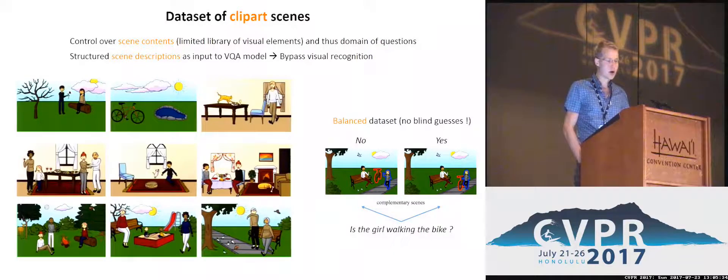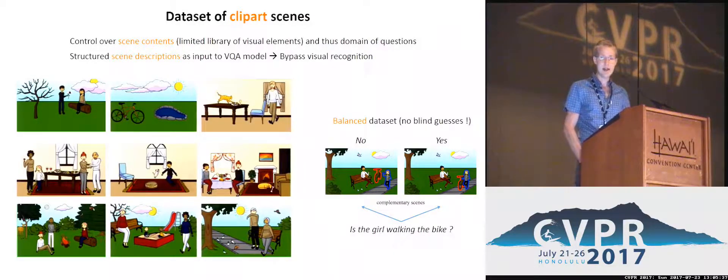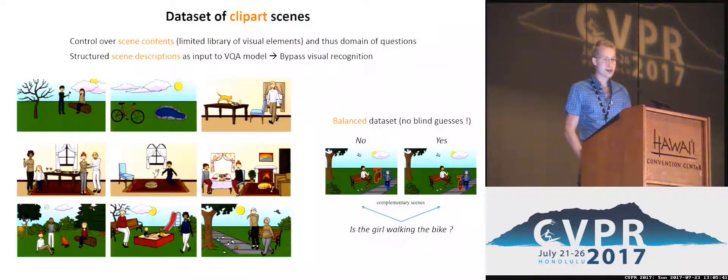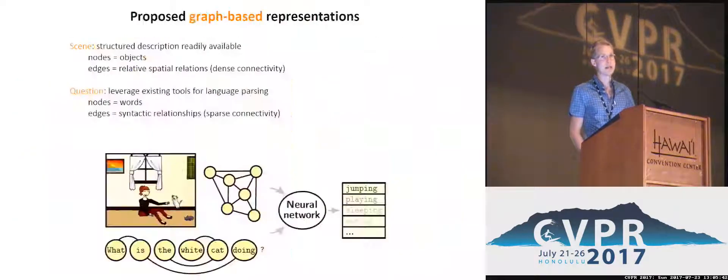This also allows a more controlled evaluation, especially with the so-called balanced dataset, in which you have two images for every question — one leading to the answer being yes and the other being no.